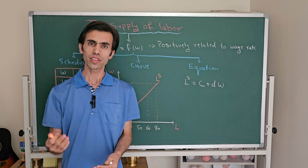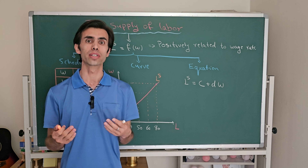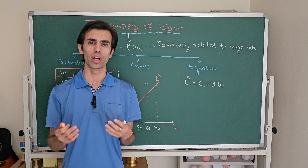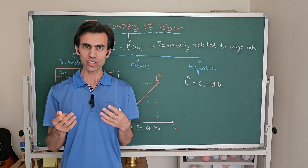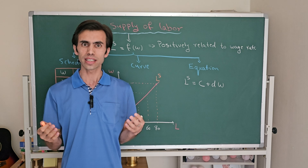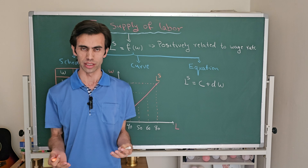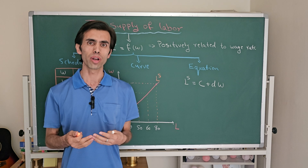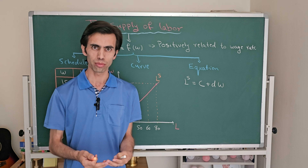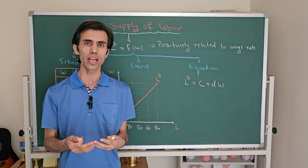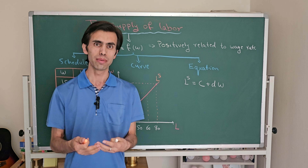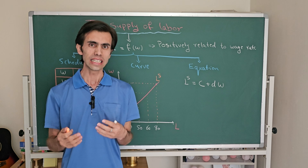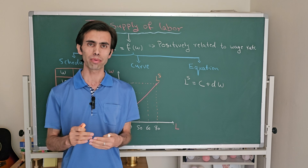Welcome guys. In this video, let's talk about labor supply. We know that workers are the king in the labor market because they decide to supply their labor. When workers are not in the labor market, there is no labor market. So the question is: why do workers supply their labor in the labor market, and how do they decide how much labor they should supply?